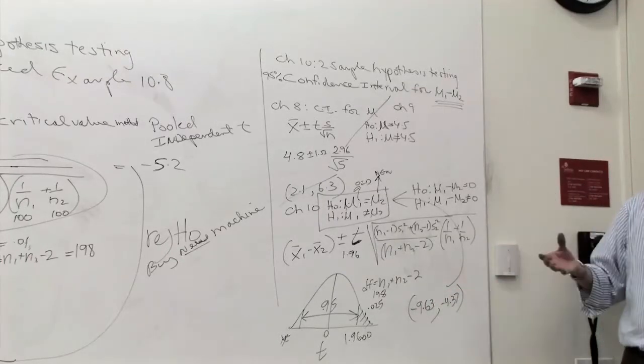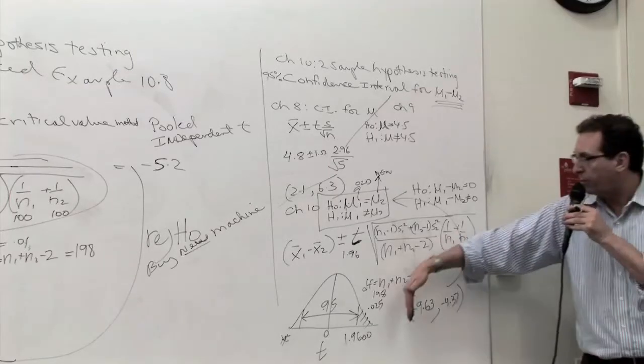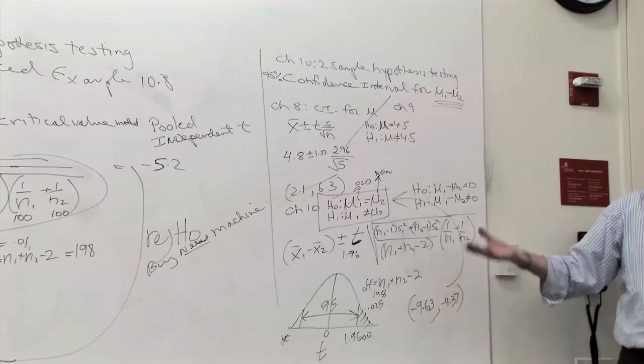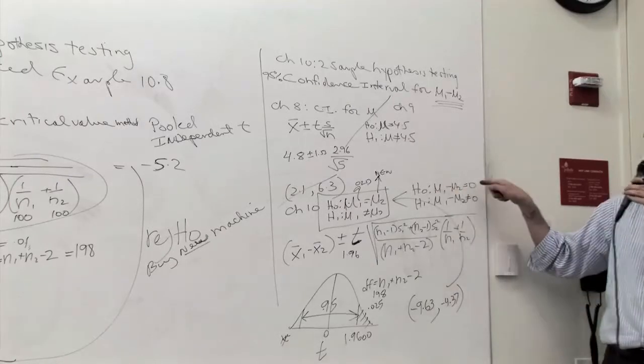So therefore, the following summary is true. That if you end up with an interval where one number is negative, one number is positive, that's another way of saying accept the H0, that there is no difference between them.